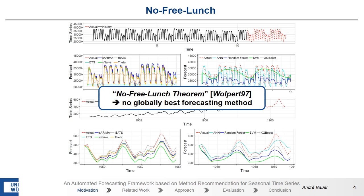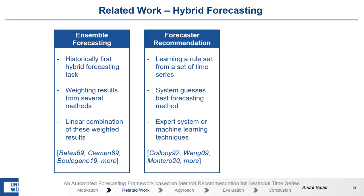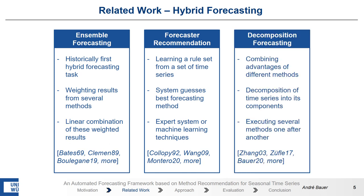More precisely, it means if we tune or optimize one method on a given time-series, it will get worse on other time-series. To tackle the no free lunch theorem, different hybrid approaches have been proposed over the years. We group these approaches into three groups. The first one is ensemble forecasting — the idea is to use a set of forecasting methods and perform a weighted ensemble forecast. The second group is forecast recommendation, where we learn on a training set which method performs best for a given time-series, and if we have new time-series, we calculate the characteristics and ask the recommendation system. The last group is forecasting decomposition — the idea is to decompose the time-series and then forecast each component with its best forecasting method, and in the end the parts are assembled again.